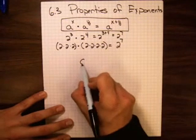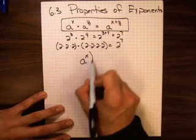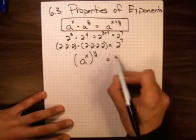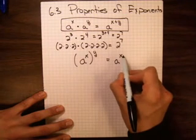Another property here is if I have a to the power of x, and then I'm going to raise all of this to the power of y, I can multiply these two. This is a to the power of x times y.